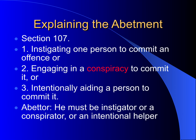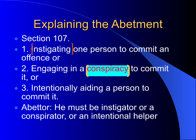Now let us explain abetment as defined under Section 107: instigating one person to commit an offence, engaging in a conspiracy to commit it, and intentionally aiding a person to commit the offence. In all these three stages, the person who instigates, or who conspires, or who aids will be the abettor.